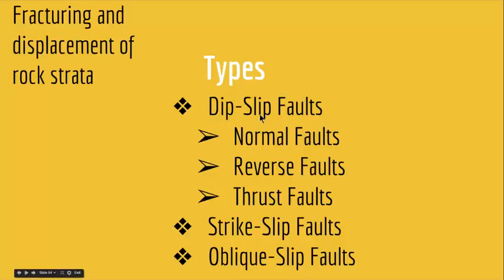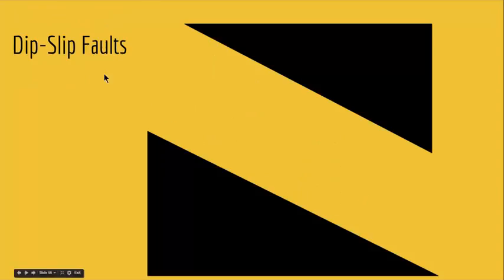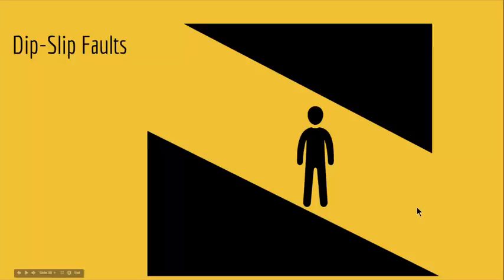Dip-slip faults have three kinds: normal faults, reverse faults, and thrust faults. Since dip-slip faults involve movement at an angle, the broken parts will go either up or down. Imagine someone standing between these parts — either this block goes up or down, or the other block goes up or down.